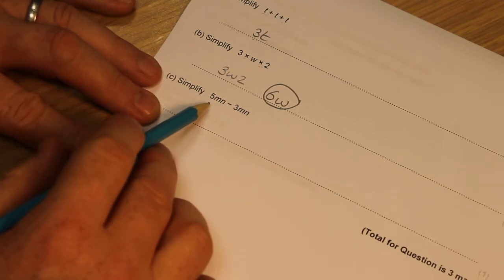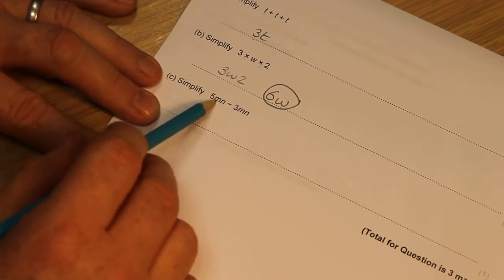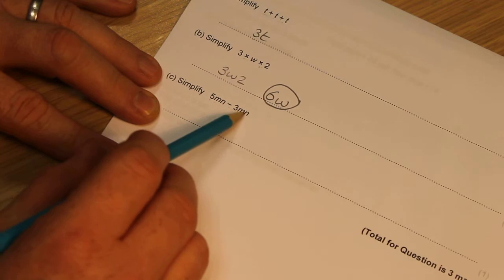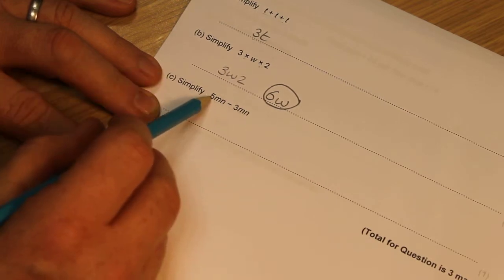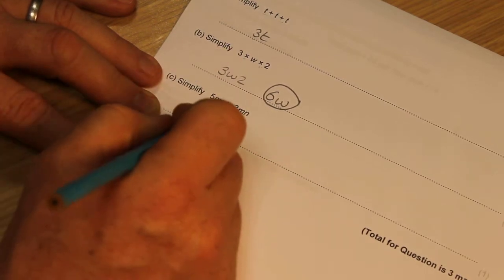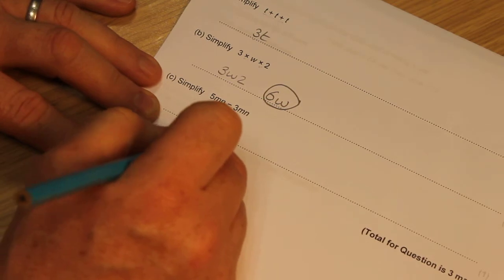This question says simplify 5mn take away 3mn. So it's like 5 take away 3, which is 2 lots of mn.